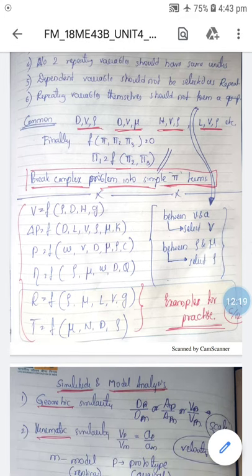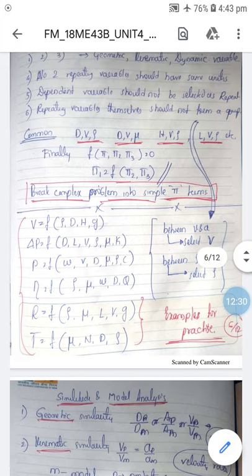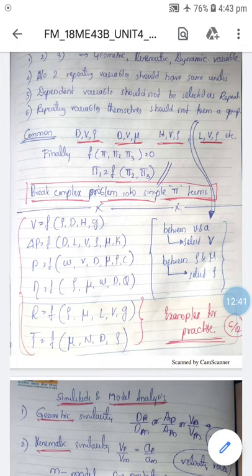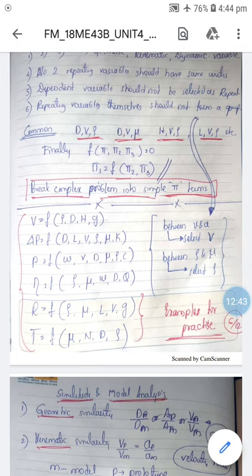The pi terms can be multiplied or divided by any constant without affecting their characteristics — for instance, dividing π₂ by π₃ produces another valid pi term. Common examples solved include velocity as a function of ρ, d, h, and g. Everyone is requested to go through the textbook problems and understand how to solve them using Buckingham's Pi theorem. The next file covers similitude and model analysis, along with additional worked problems on dimensional analysis.